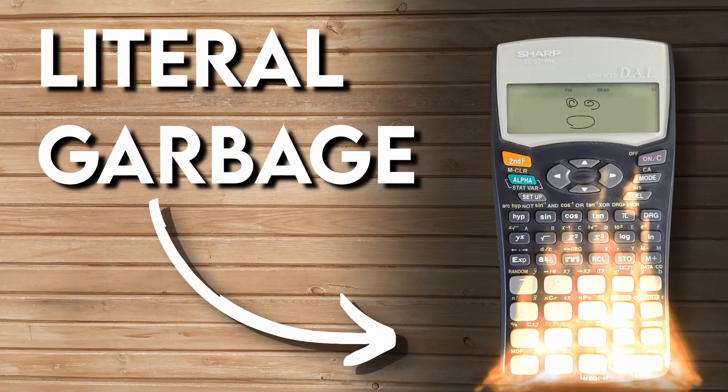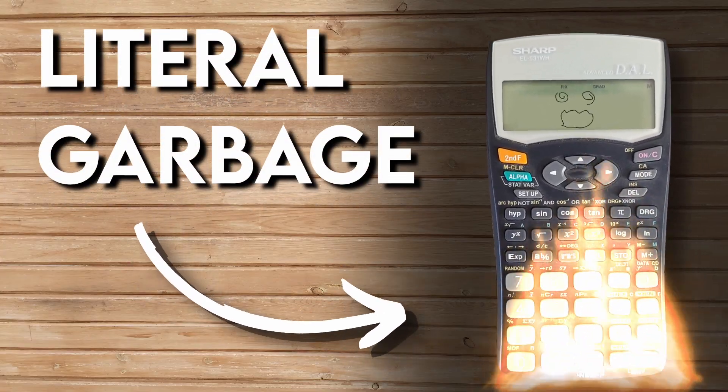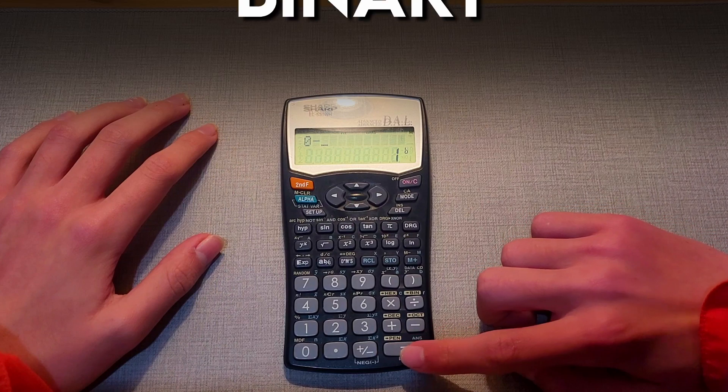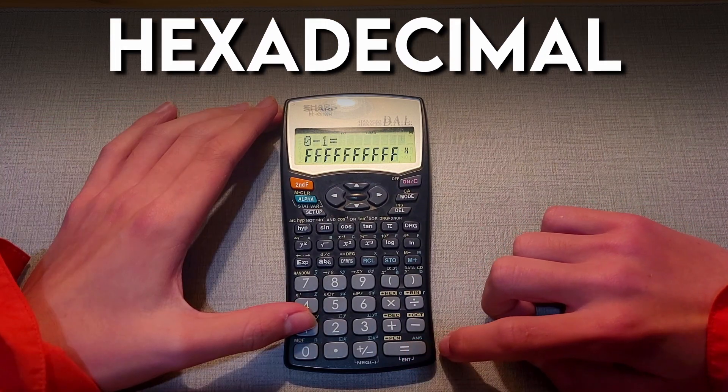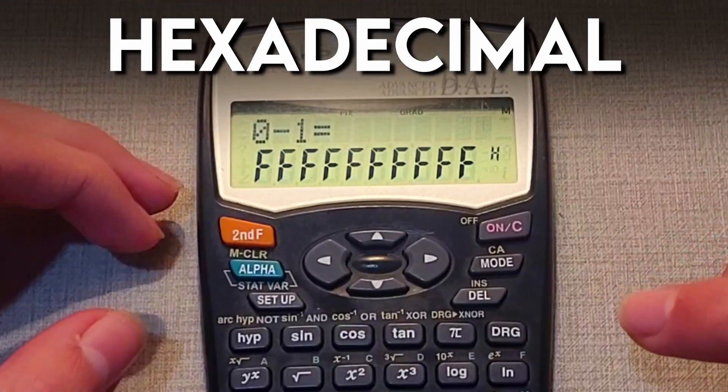The natural instinct to such a result was to try every other system and see if it suffered from the same fault. Binary gave me repeating 1s, octal gave repeating 7s, and hexadecimal seems like it's trying very hard to say a slur.